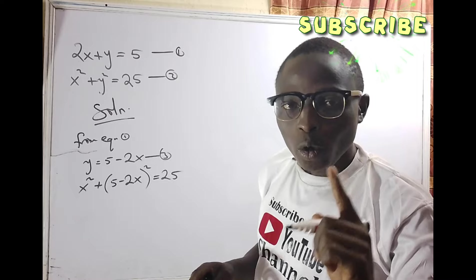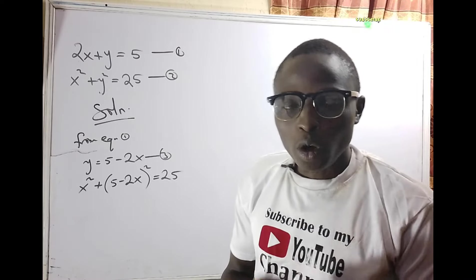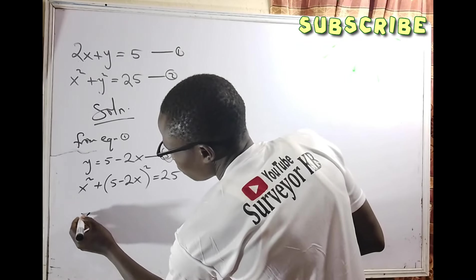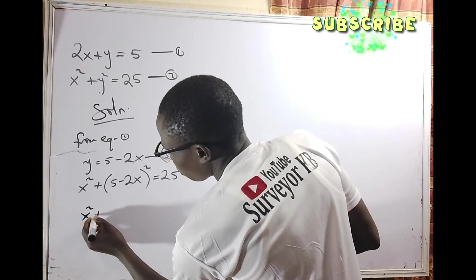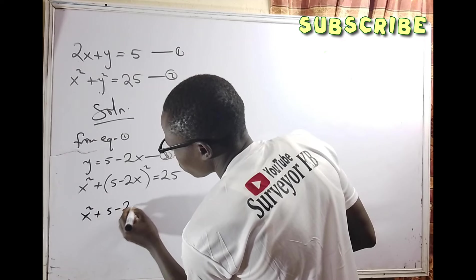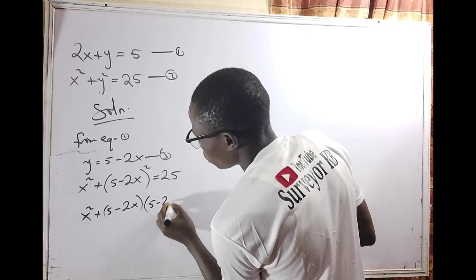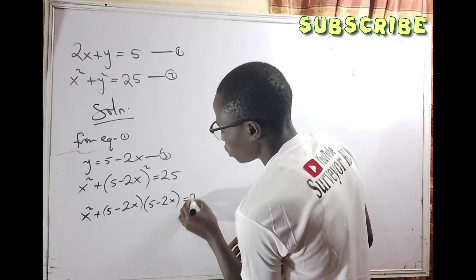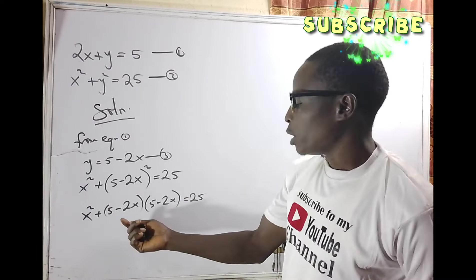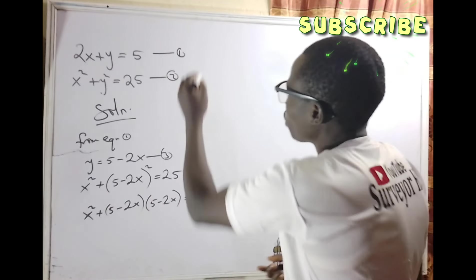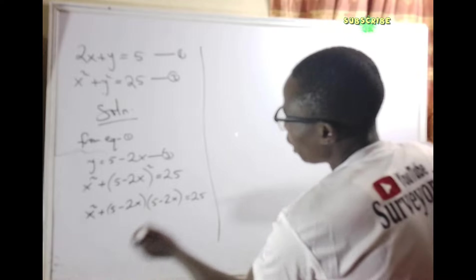You can see that at this stage we only have one unknown which is x, and it's going to be easier for us to handle the equation. So x squared plus (5 minus 2x) multiplying (5 minus 2x) equals 25. We need to write this bracket in two places.